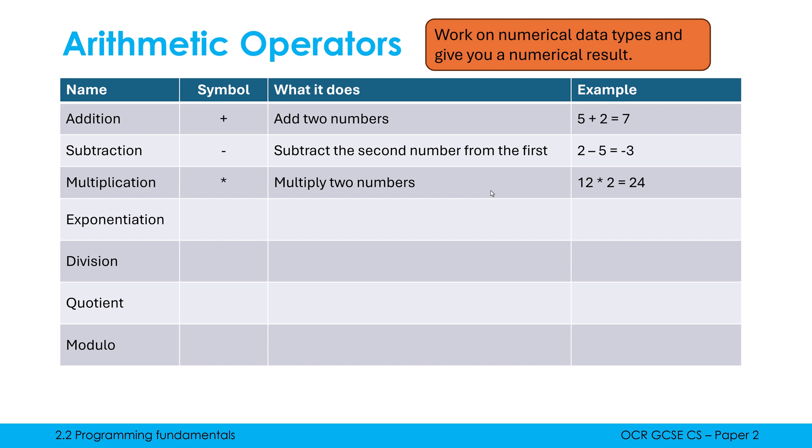The next one, exponentiation, is a mouthful to pronounce and spell. This is doing powers. The way you do this in Python is using two asterisks back to back. But in OCR reference language, they'll use this little caret symbol. So all this does is raise the first number to the power of the second number. And this is any power. It's not just squaring.